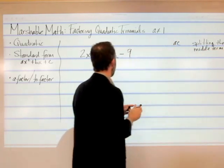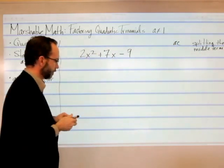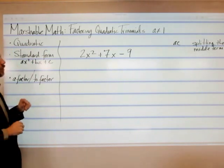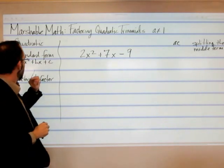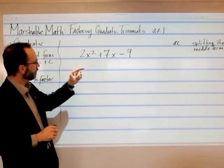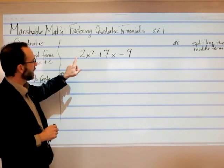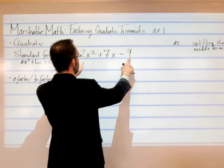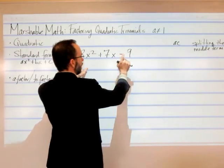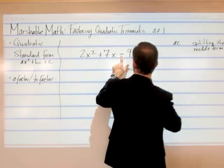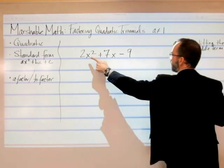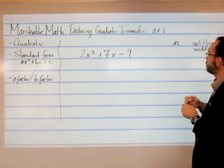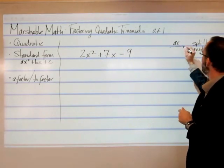You'll see why in a second. So I'm going to jump right into it. The way that I would factor this is, after getting it in standard form, I would take the a value times the c value. So in this case, 2 times 9 — ignore the negative sign here for a moment, just take the number times the number. So 2 times 9 would be 18.